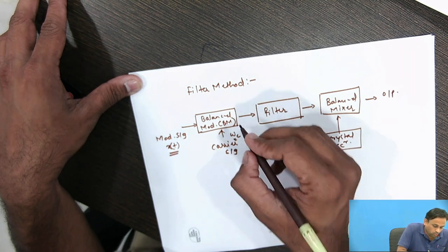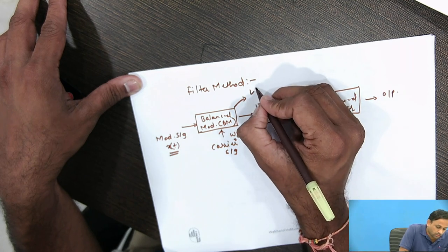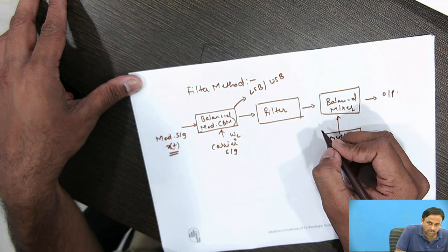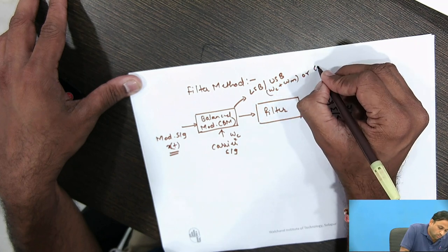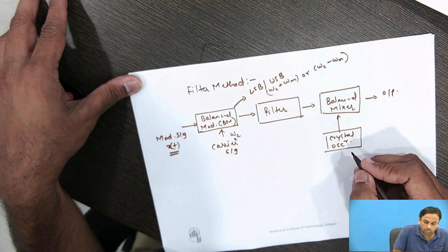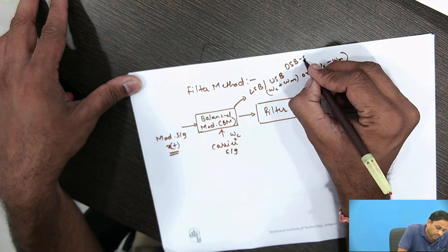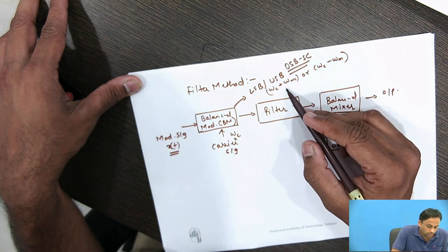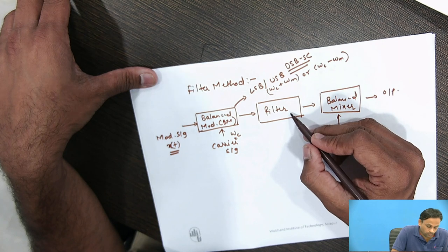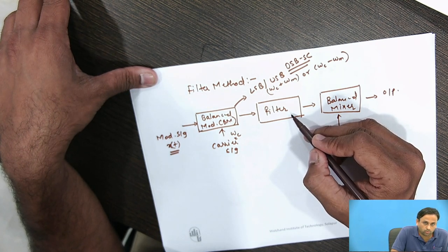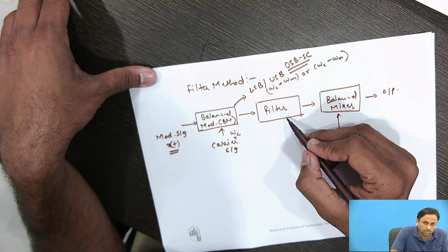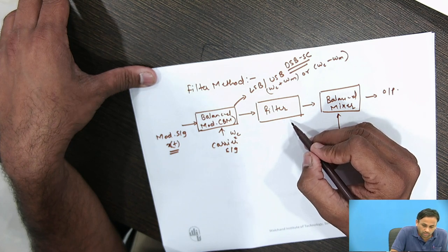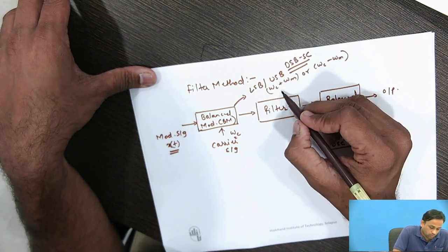The output of the balanced modulator suppresses the carrier and produces a DSB-SC signal with components at ωc + ωm and ωc − ωm. When this DSB-SC signal is passed through a filter, the filter removes unwanted frequencies. There are various filter types used in electronic communication: low pass, high pass, band pass, band stop, and band reject filters.